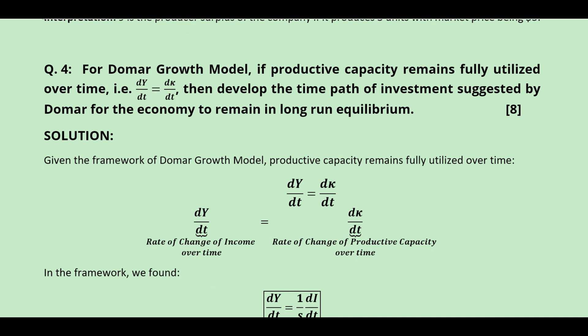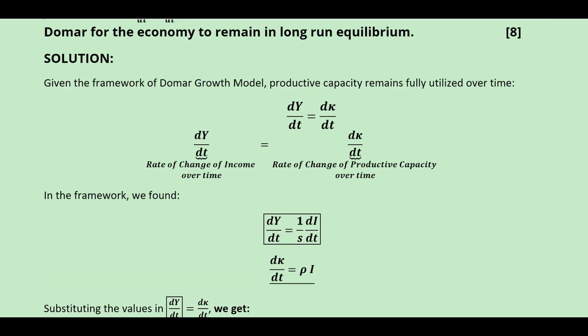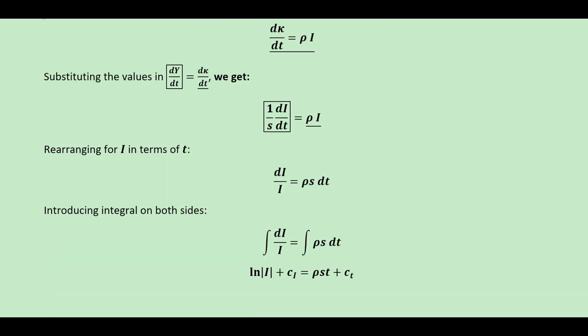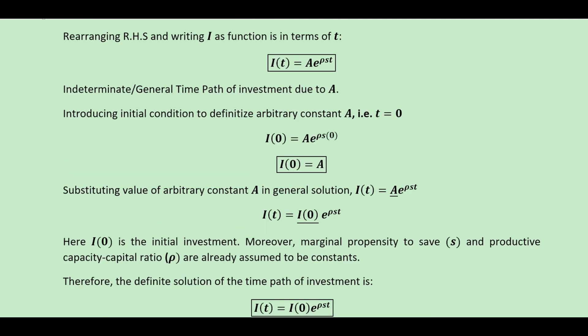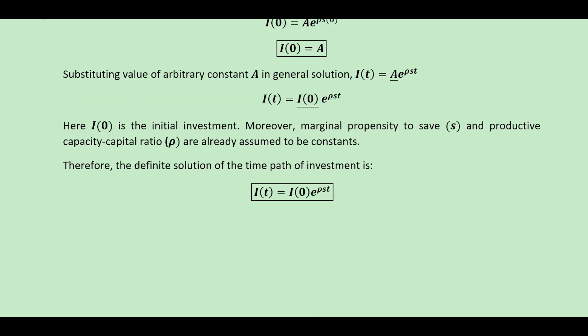The next question is about the Domar growth model. The equilibrium condition is that productive capacity remains fully utilized over time. We are required to develop the time path of investment. You can refer back to the Domar growth model video on this channel for all intermediate steps. Scrolling through, the general investment time path is developed, and introducing the initial condition gives the definite time path. Here, rho (productive capacity per capital) and the marginal propensity to save are assumed constant.